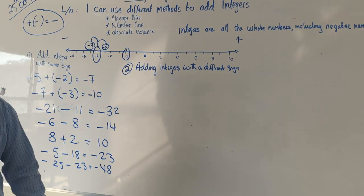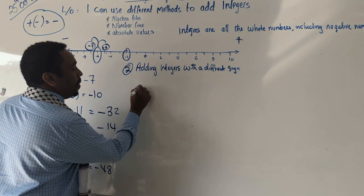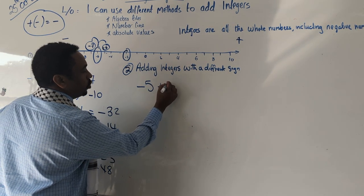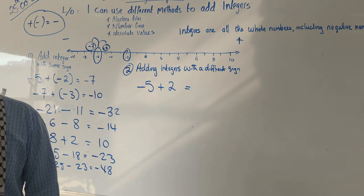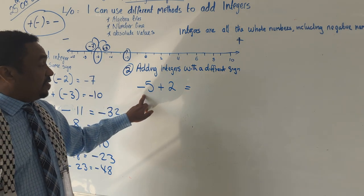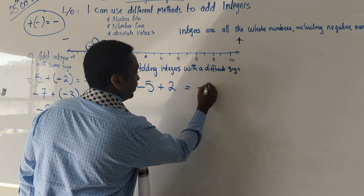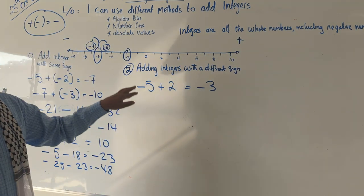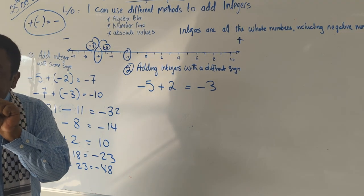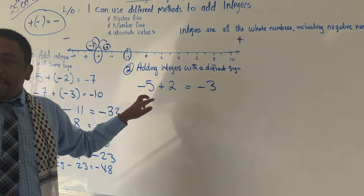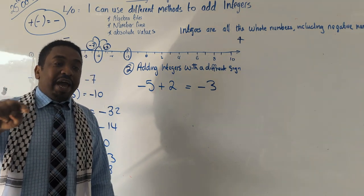When adding integers with different signs, let's use an example: minus 5 plus 2. The answer will be minus 3. Why? Because the big number is with the negative. If the big number is carrying the negative, you still take them away, but the answer will always be negative.